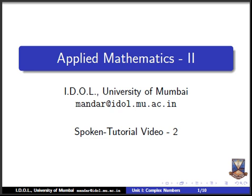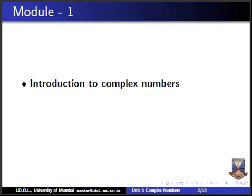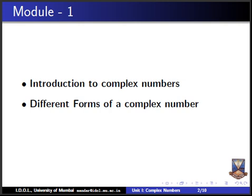As we have seen in the previous lecture, the syllabus of the Semester 2 paper Applied Mathematics 2 has 6 units. In this video, we are going to cover the first module in Unit 1 of Complex Numbers. For Module 1, the first topic is Introduction to Complex Number System, and the second topic is about different forms of a complex number. For Unit 1, we have 3 to 4 videos giving brief content about Unit 1.